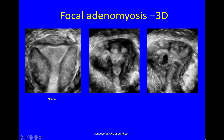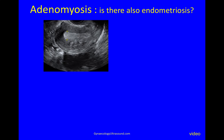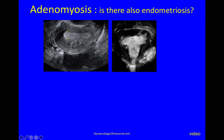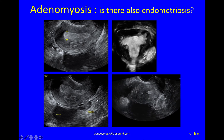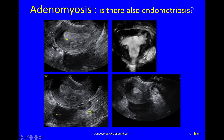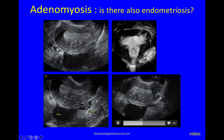When you see adenomyosis you have to think: is there also endometriosis? In this different case you can see islands of endometrium in the myometrium, and on 3D the out-budding of endometrium into the myometrium is clearly visible. This patient also has an ovarian endometrioma, a nodule of deep endometriosis in the bowel, and deep endometriosis in the ligaments — so adenomyosis in the myometrium, ovarian endometrioma, and deep endometriosis in the bowel and ligaments.